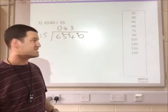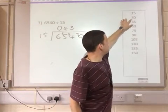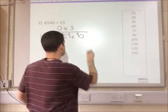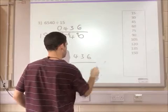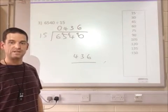How many times does 15 go into 90? That's one, two, three, four, five, six. With no remainder this time. So the final answer for that one is 436.